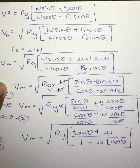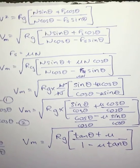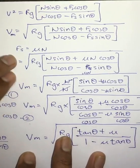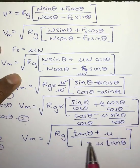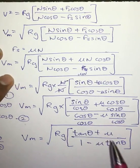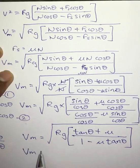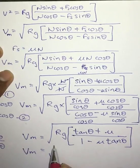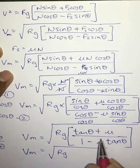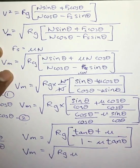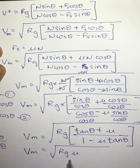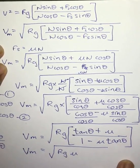Now if we consider the case where the road is not banked, then theta equals zero. When θ = 0, tan 0 = 0, and the equation simplifies to: vm = √(μrg). This is the equation for maximum velocity on an unbanked road.